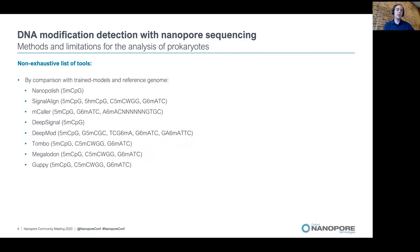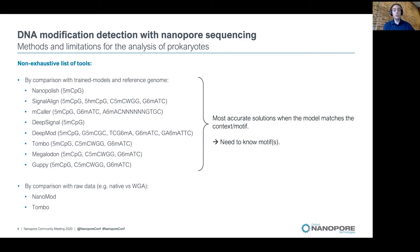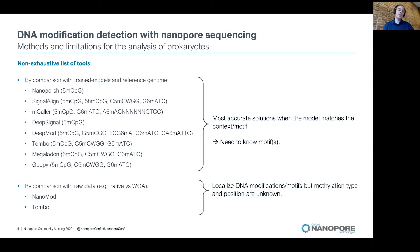The first group is detection by comparison with trained models and a reference genome — this includes Nanopolish, DeepSignal, and Megalodon, for example. In the second category, we have tools that do detection by comparison with raw data, for example comparison with native and whole-genome amplified datasets where DNA modifications are effectively removed. The first category tools are most accurate when the model matches the context or motifs, meaning you need to know the motif first. The second category can localize DNA modifications and motifs, but cannot easily find the methylation type or the modified position within the motif.